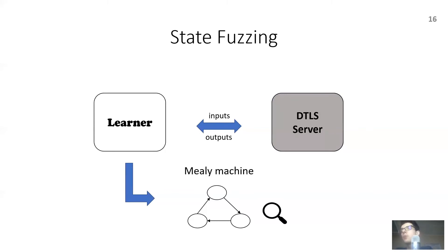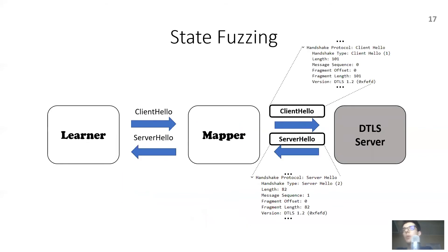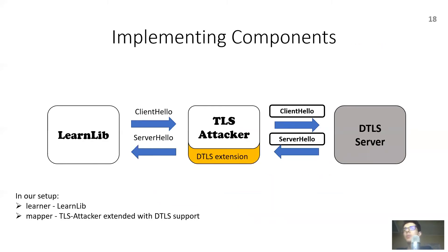Before we can apply state fuzzing in practice, we need one additional component called the mapper. The mapper translates between learner inputs/outputs and inputs/outputs recognized by the system. Since we are testing DTLS servers, the system inputs/outputs are essentially DTLS packets sent over UDP. We implemented the learner based on LearnLib, a Java library containing implementations of several learning algorithms. The mapper was constructed on top of TLS-Attacker, an extensible framework for testing TLS implementations. When we started this work, TLS-Attacker only supported TLS, so we extended it with support for DTLS and used it to construct our mapper.